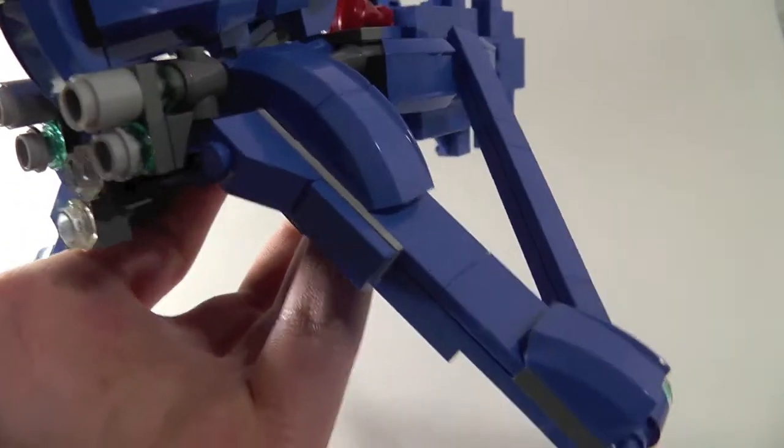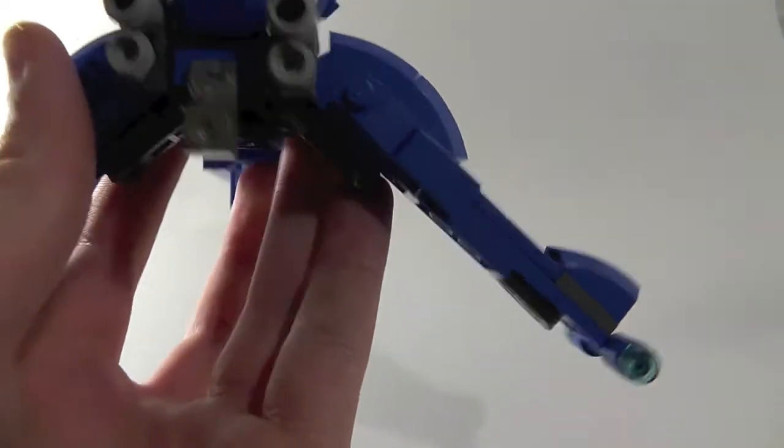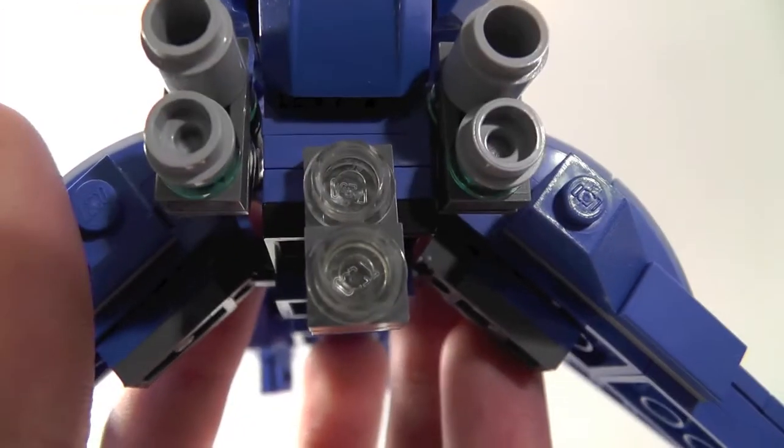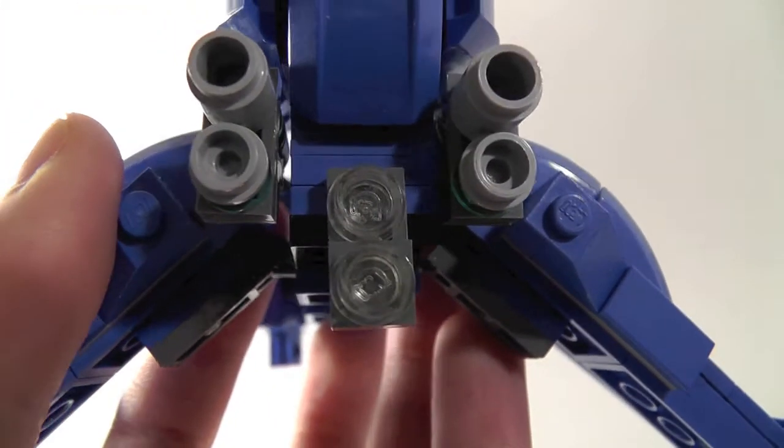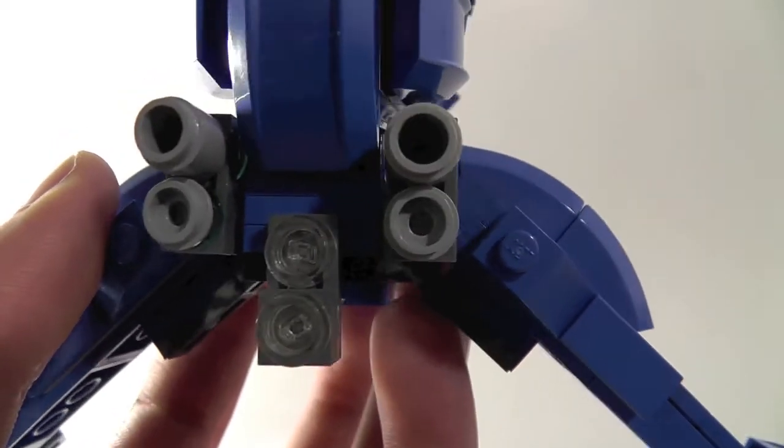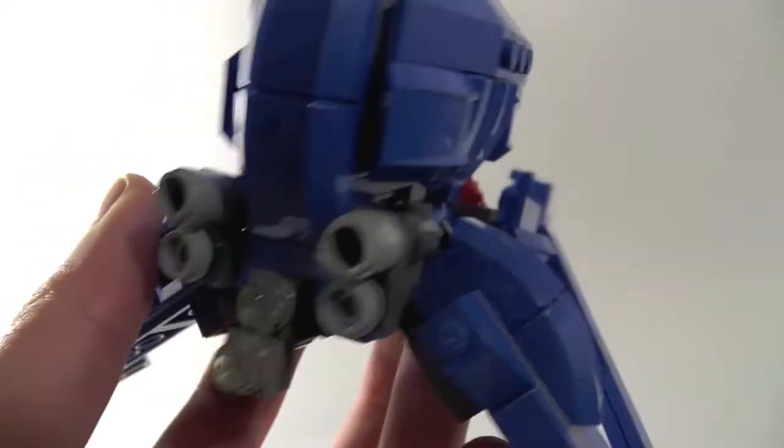So in the front we have two plasma guns and this bottom light thing. And I guess this light thing can also double as the fuel rod cannon if you want.